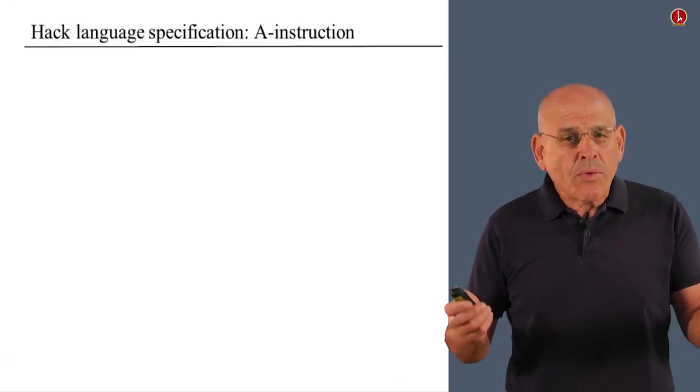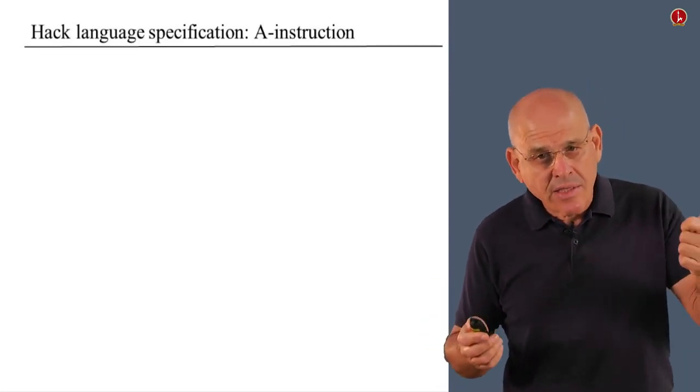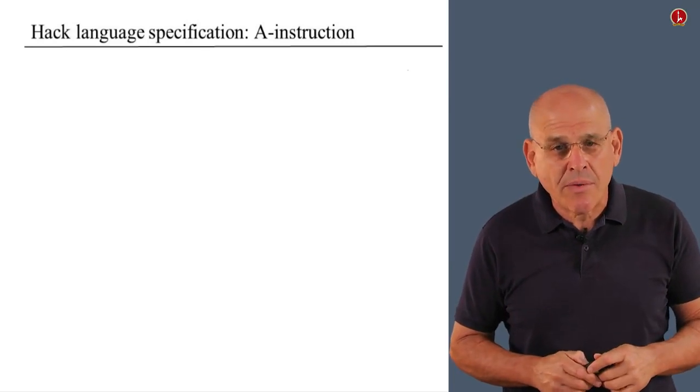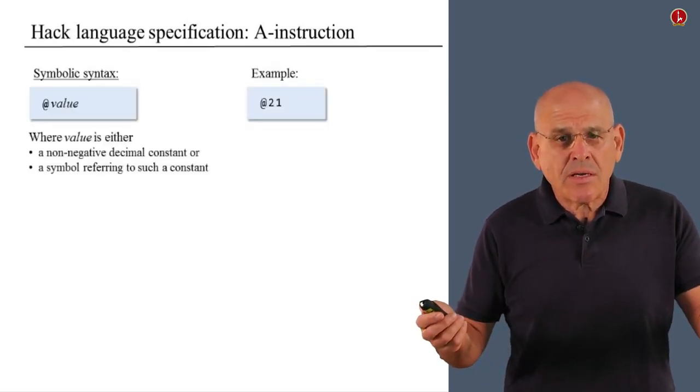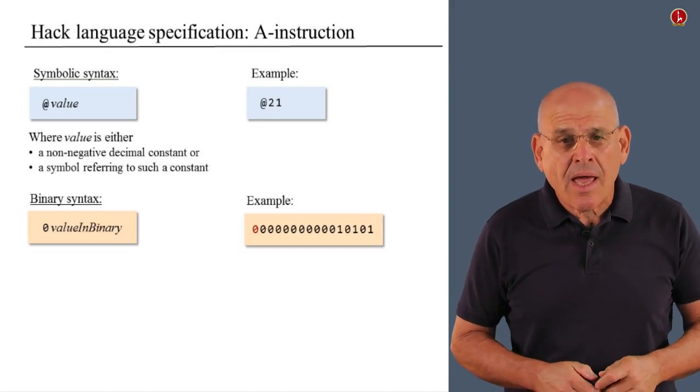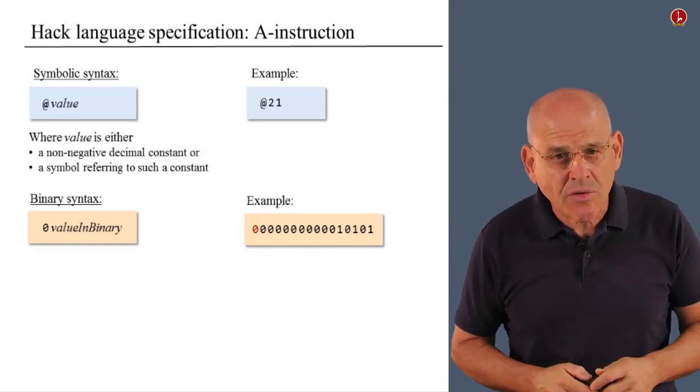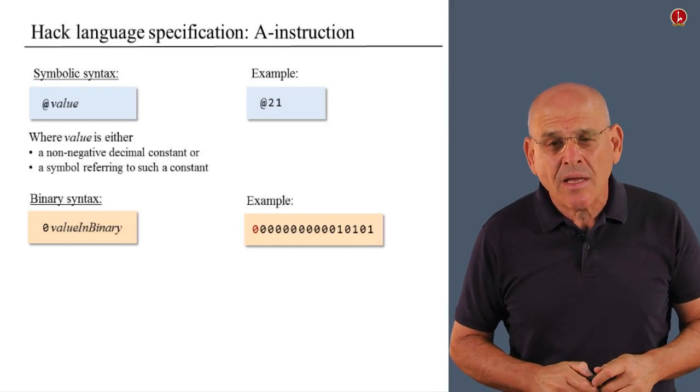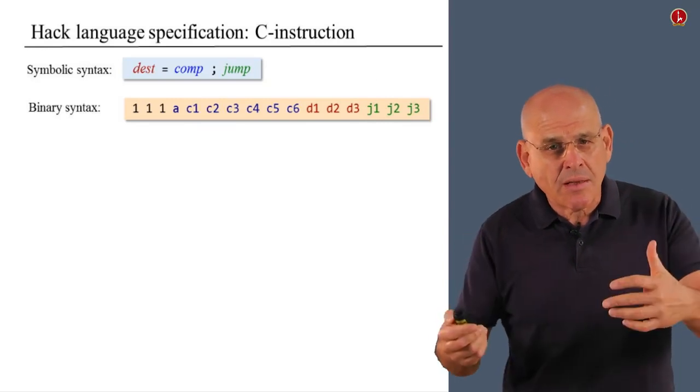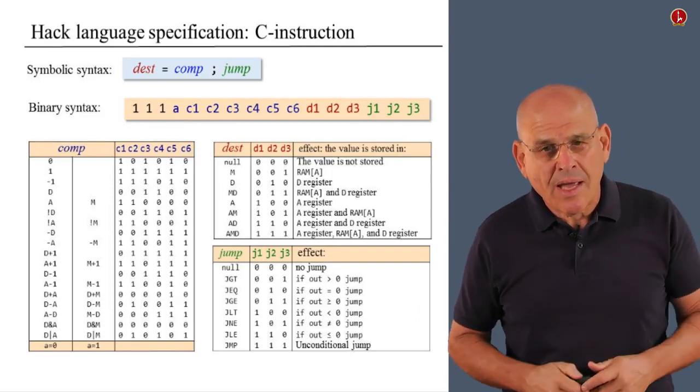So what do we have to know about the Hack language? The Hack language consists of A instructions, C instructions, and symbols. The A instruction comes in its symbolic syntax, and here is the equivalent binary syntax. The C instruction, in a very similar fashion, has a symbolic syntax and a binary syntax. And there's a set of tables that describe the mapping between the former and the latter.